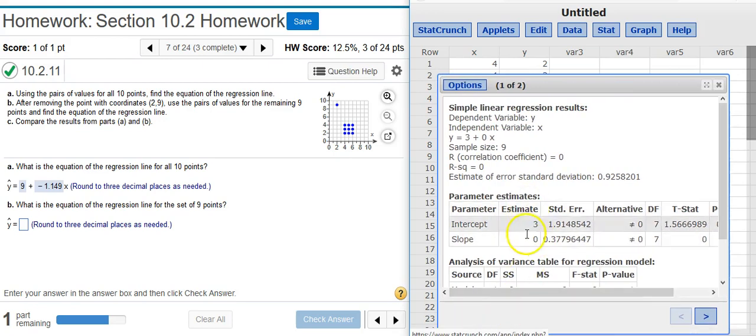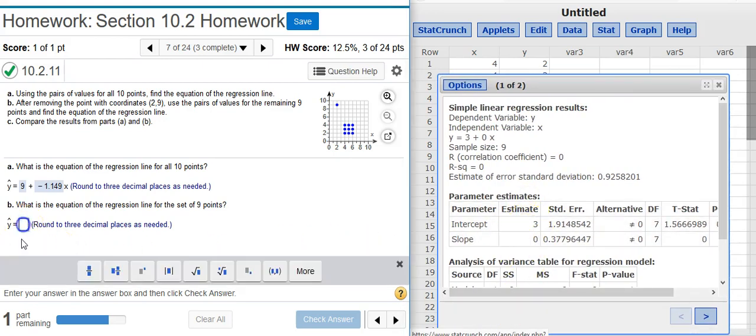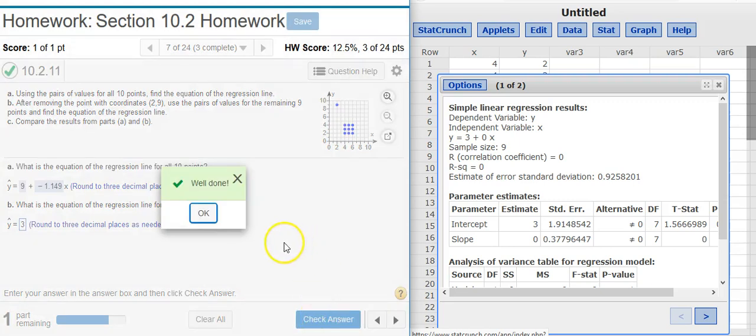So now we can see we've got new values here. Now my regression equation y hat equals 3. And of course, zero slope means there's no x variable for my equation. Well done.